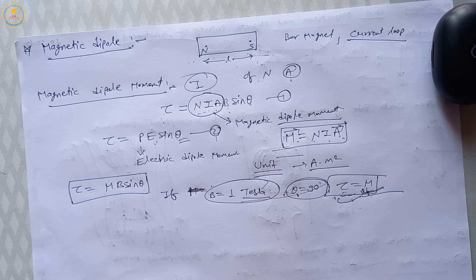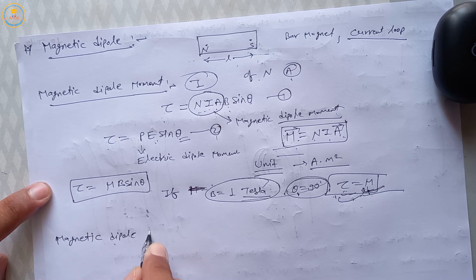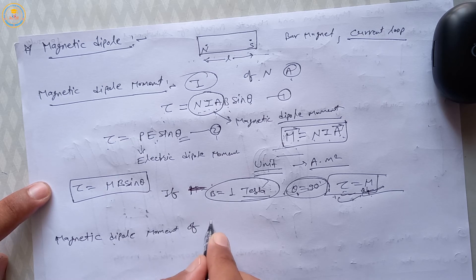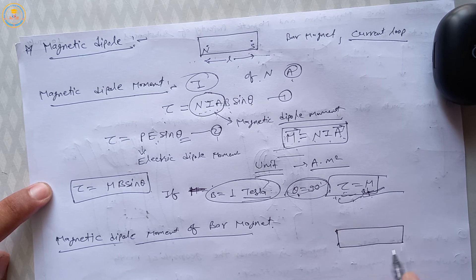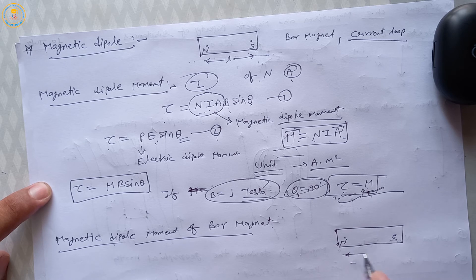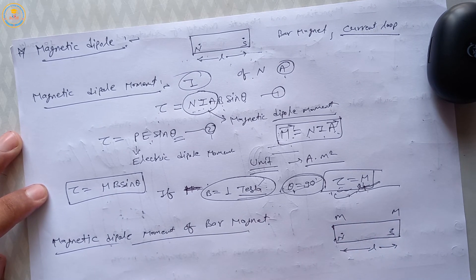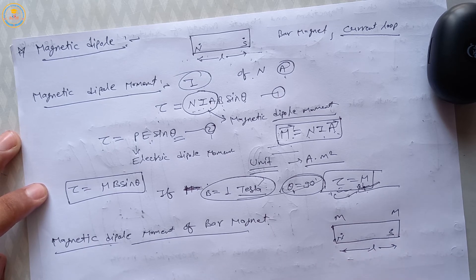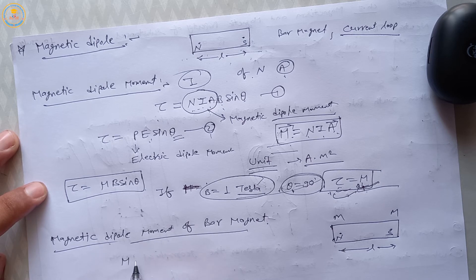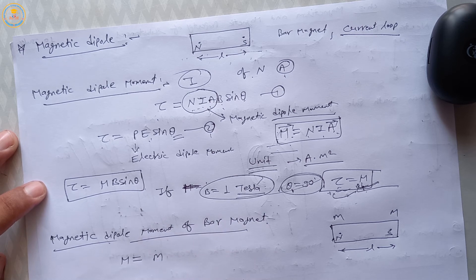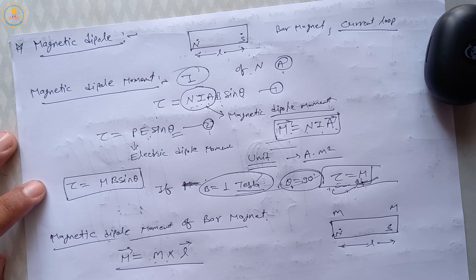This is the magnetic dipole moment for a current-carrying loop. Now, magnetic dipole moment of a bar magnet: suppose we have a bar magnet of effective length L with poles N and S, and pole strength m. Then the product of the pole strength of any pole and the effective length of the bar magnet is called the magnetic moment, denoted by capital M. So M equals m × L.